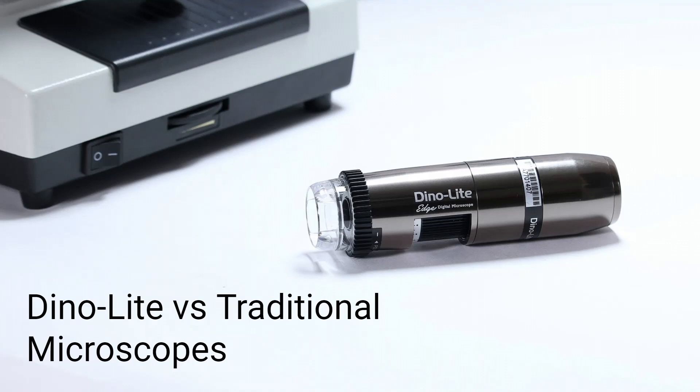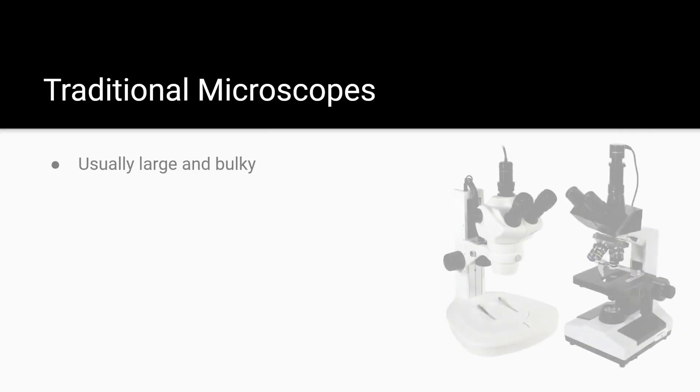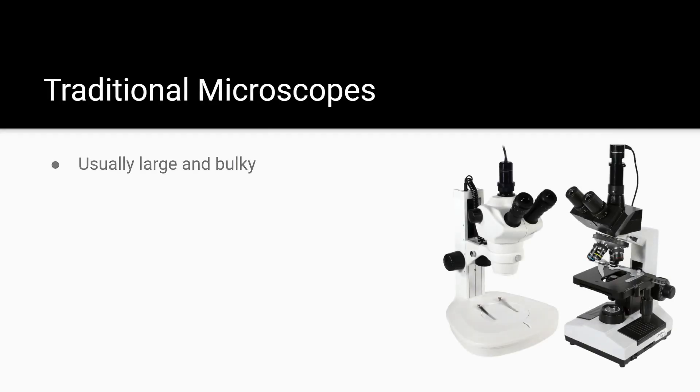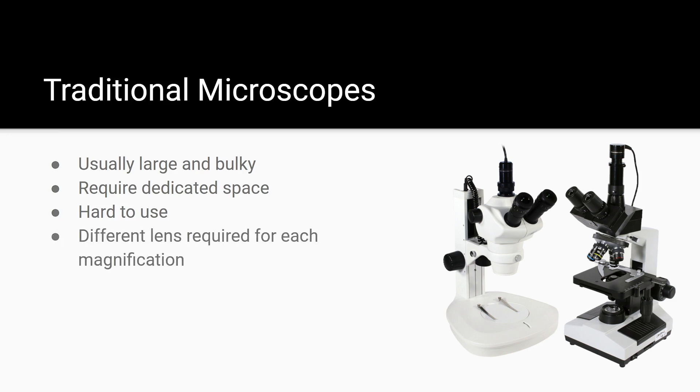So what makes Dynalight Microscopes different from traditional microscopes? First of all, traditional microscopes can be very large and bulky, and if you have limited space, they can be very difficult to store. They can be hard to use or train people on, and they require a different lens for each magnification that you wish to work at. They usually require that you have samples prepared ahead of time, which can make them hard to use for non-destructive testing.